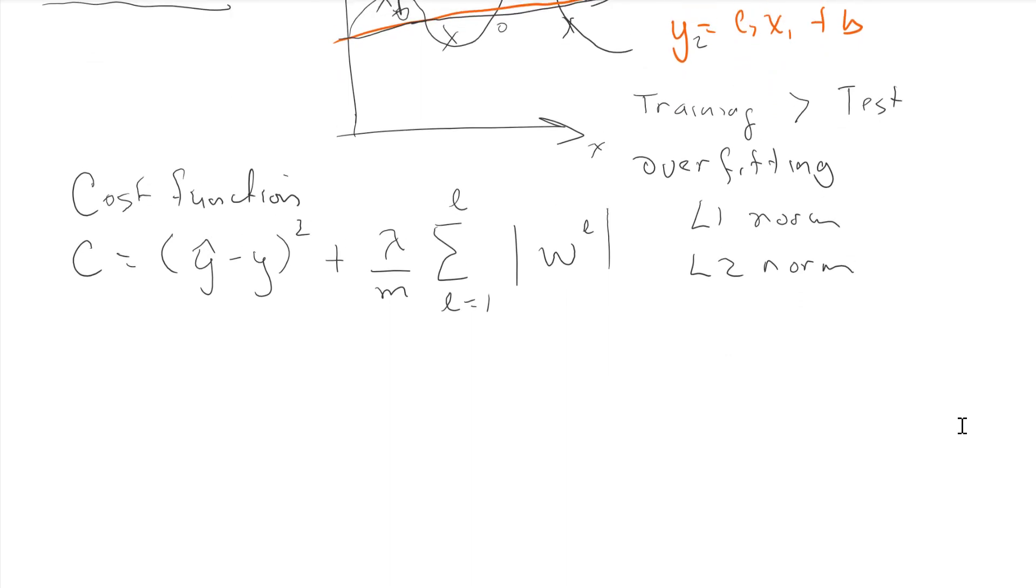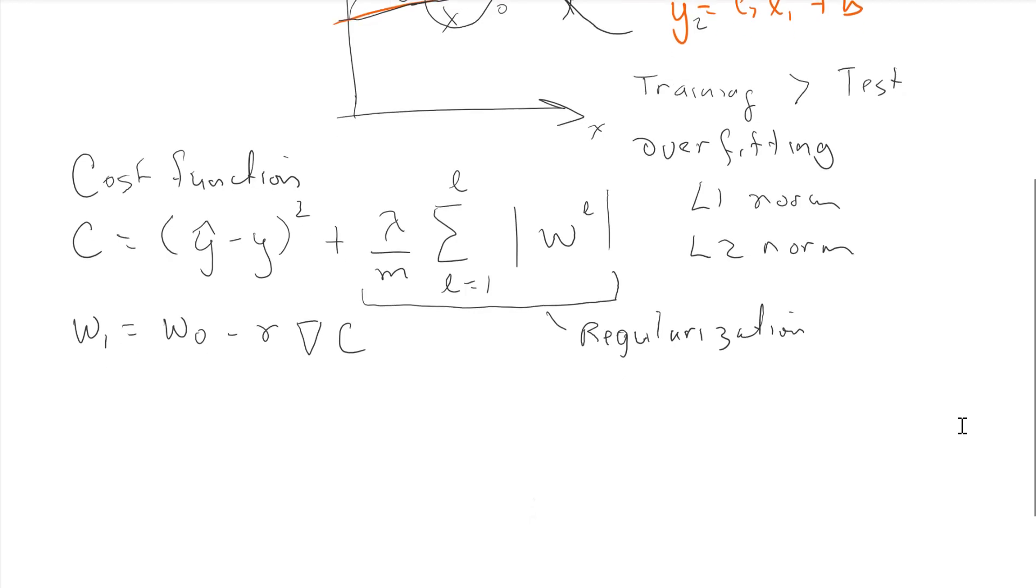Remember, the purpose of the neural net is to calculate and optimize the weights. How do we change the weights? The next weight equals the previous weight minus r (the learning rate) times the gradient of the cost function. We're going to take this component called regularization and add it to our cost function.